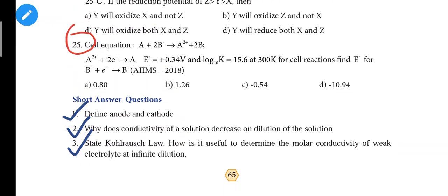The ninth lesson is electrochemistry, starting at page 65. First question: Define anode and cathode - this is an easy question about positive terminal and cathode. Second question: Why does conductivity of a solution decrease on dilution of solution?